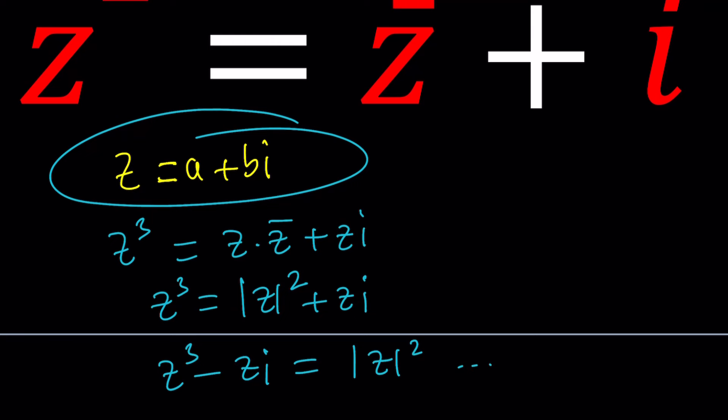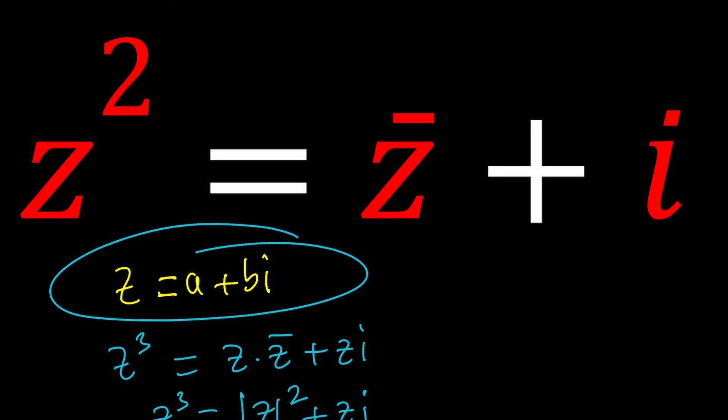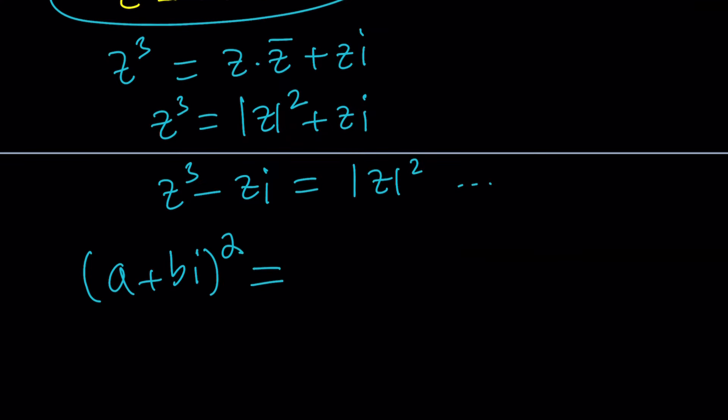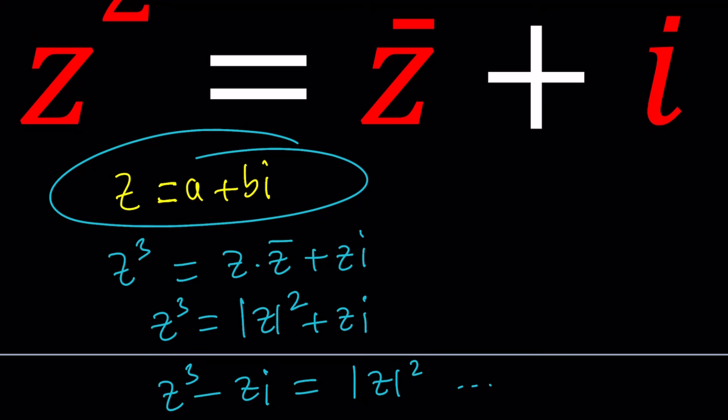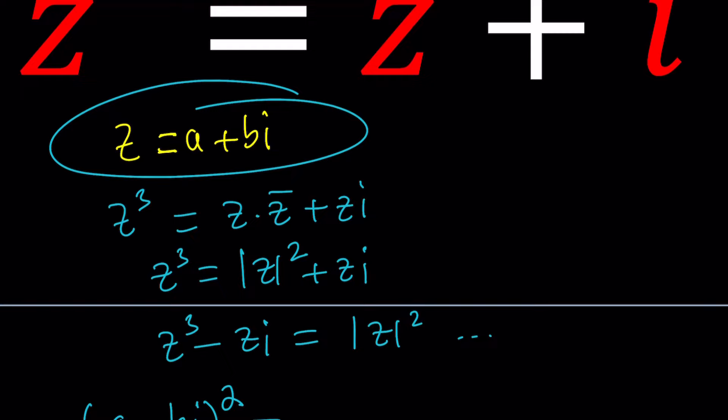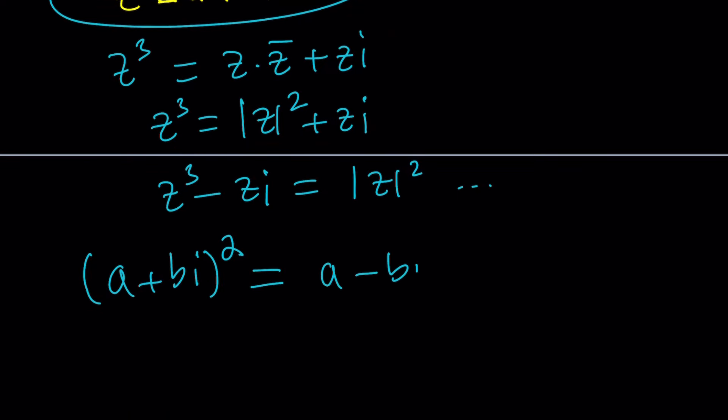Okay, let's go ahead and do this then. Replace z with a plus bi. So if you do that, we're going to get a plus bi squared equals. I told you I was going to talk about the complex conjugate of z. If z equals a plus bi, z bar is going to be a minus bi. And this is the equation we get.